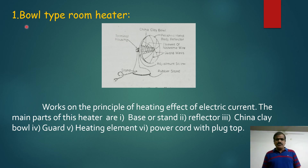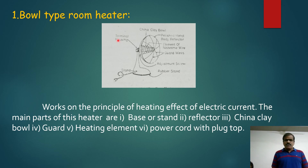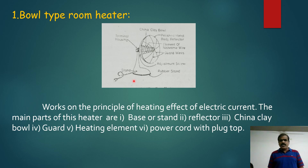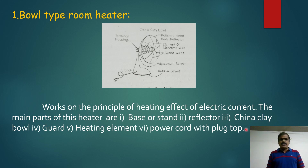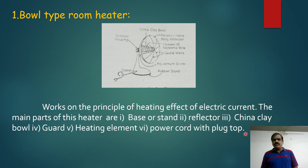Now I will show you the bowl type room heater. The main components are: Number 1, base; Number 2, reflector; Number 3, china clay bowl; Number 4, guard; Number 5, heating element; Number 6, power cord with plug top.